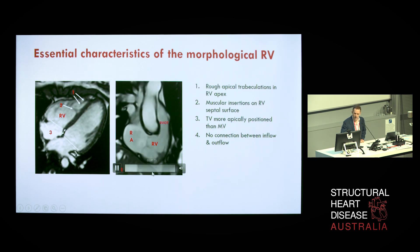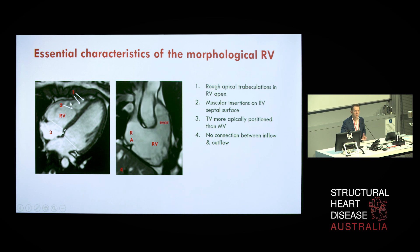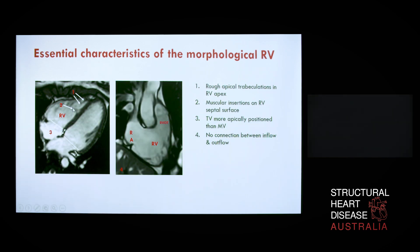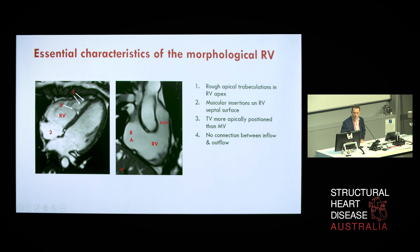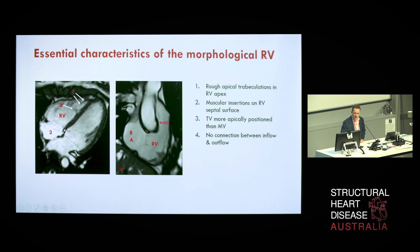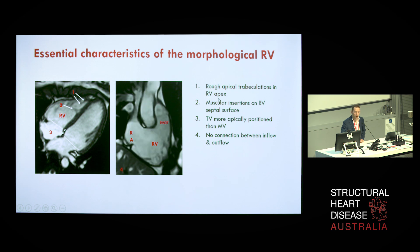Once we achieve a four-chamber view, this image illustrates the essential anatomic characteristics of the right ventricle: the rough apical trabeculations versus the finer trabeculations in the left ventricle, the septal wall attachments and moderator band, and the fact that the tricuspid valve is relatively apically displaced compared to the mitral valve. The lack of connection between inflow and outflow becomes very important when defining chambers in complex congenital heart disease.